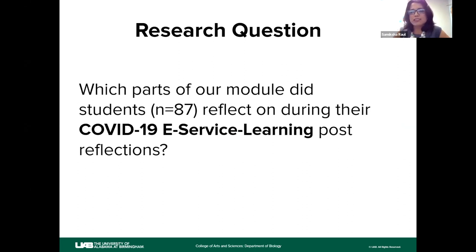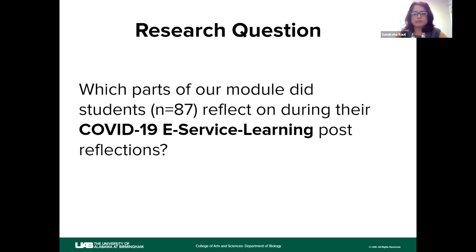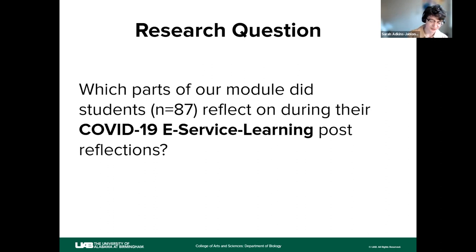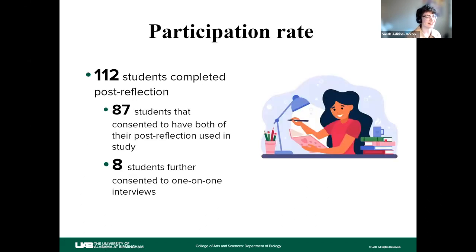We then began to analyze the data. Over 100 students completed post-reflection surveys at the end of the module. Specifically, 112 students in the class completed it — because it was part of their grade — and 87 of them consented, after we received IRB approval, for us to use their post-reflections in this study. At the end of the semester, we also tried to recruit students for one-on-one Zoom interviews. Because the university had already switched to online, it was difficult to recruit, and thankfully eight students participated. That was a lesson learned for recruiting students in the online educational landscape.